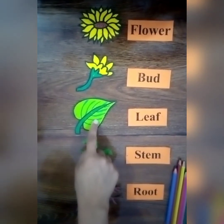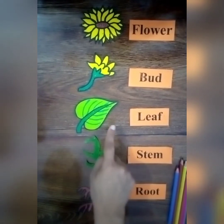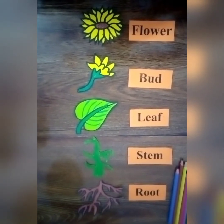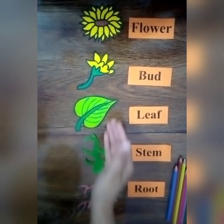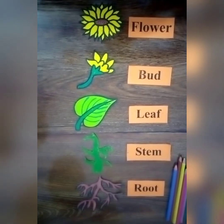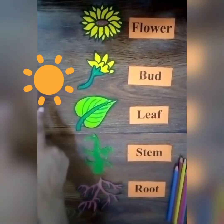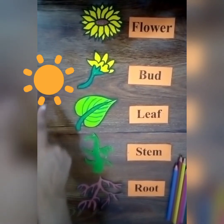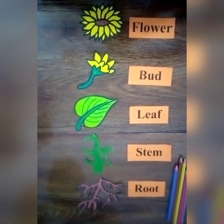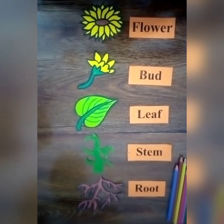Leaves are the food factories of plants, which are green in color due to the presence of a green pigment called chlorophyll. The chlorophyll absorbs light energy from sunlight to prepare food for the plant by the process of photosynthesis.